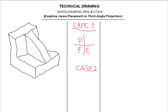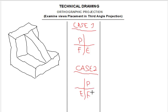For case two, we'll have the end elevation in the third quadrant, we'll have the front elevation or the front view in the fourth quadrant, and then we'll have the plan in the first quadrant. Here we'll see that the plan is always on top of the front view.